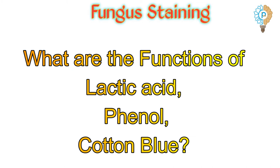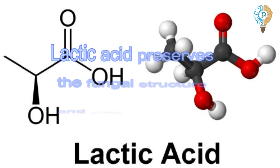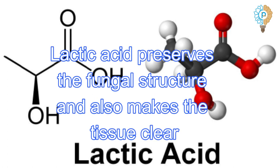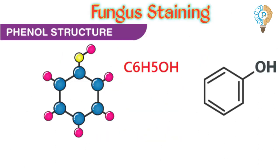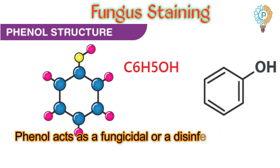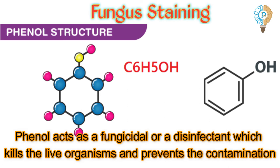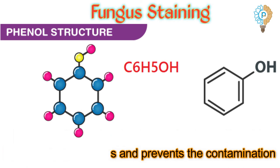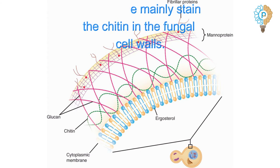Now we have to know about the function of all these chemicals which we are using to prepare the stain. The first one is lactic acid — lactic acid preserves the fungal structure and also makes the tissue clear so that we can easily observe it under the microscope. The second one is phenol — phenol acts as a fungicidal or disinfectant which kills the live organisms and prevents contamination. The third one is cotton blue — cotton blue mainly stains the chitin of the fungal cell wall.